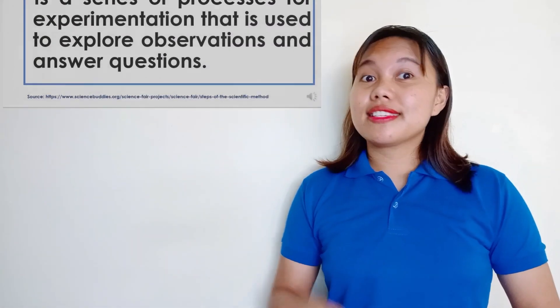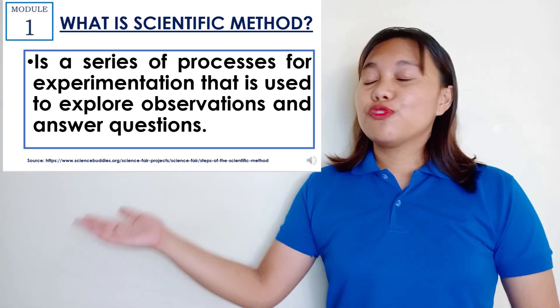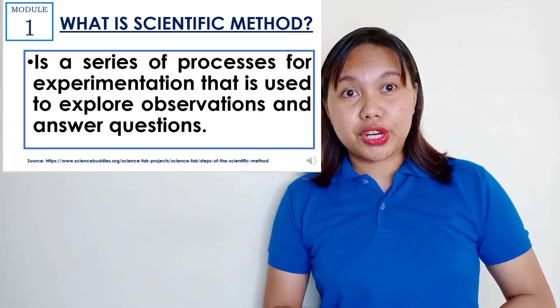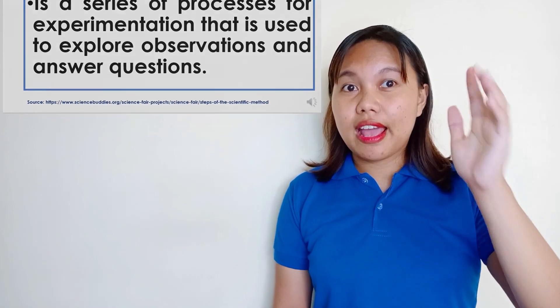What is a scientific method? Do you have any idea? Well, that is closer to the answer. Let's define what a scientific method is. Scientific method is a series of processes for experimentation that is used to explore observations and answer questions. Remember, if you are going to do the scientific method, remember the process and the procedure — it's like a ladder, step-by-step processes.